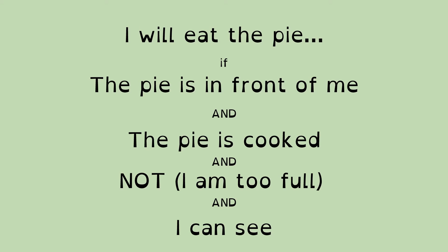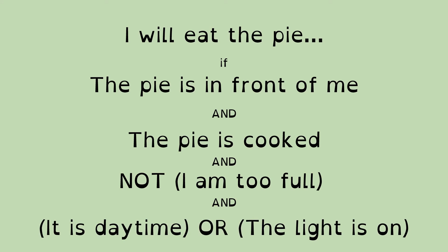Now we've had this statement, I can see, a little while ago, which is where we had our OR. So let's substitute the two statements with the OR in there: it is daytime or the light is on. So our full set of conditions: I'll eat the pie if it's there, if it's cooked, if I'm not too full, and if it's daytime or the light's on so I can actually see the pie.